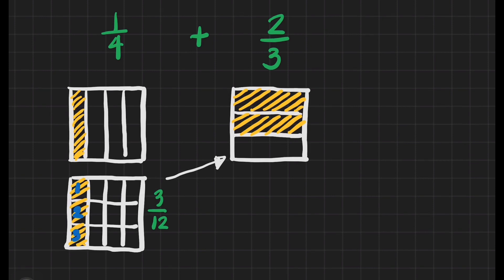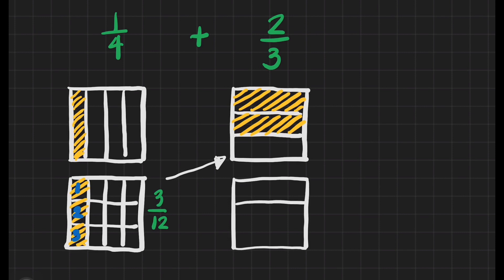Now we will draw another box for 2/3 because we will rename this also, just like what we did in the 1st fraction. We will divide it into 3 equal parts and follow the 1/4 at the top. We will follow the number of lines and how it is divided in the 1st fraction — it is divided into 4 equal parts — so we will just follow that.